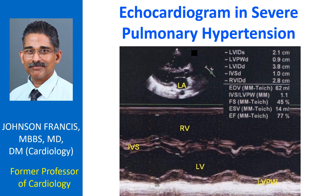When the right ventricle is dilated due to volume overload, as in atrial septal defect, the septal motion becomes paradoxical — moving towards the right ventricular free wall in systole. Here, the septal motion is towards the left ventricle in systole, suggesting that right ventricular enlargement is due to pressure overload rather than volume overload. Estimation of ejection fraction by M-mode becomes erroneous if paradoxical septal motion is present.